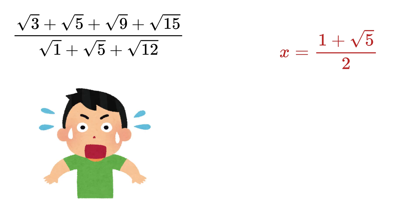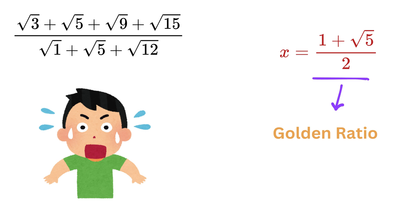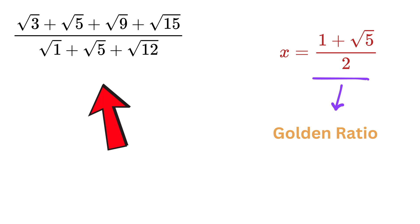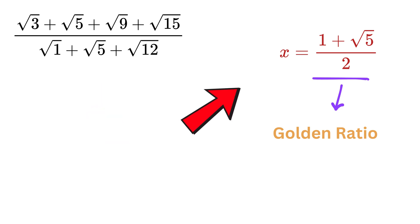This is giving me goosebumps — I am in shock right now, because this number is equal to none other than the well-known golden ratio, which is a special number that appears in nature, art, and mathematics. So all these ugly-looking square roots simplify to this beautiful golden ratio.